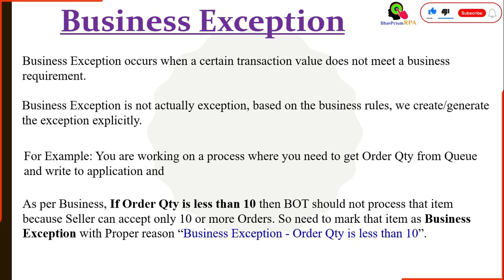Whenever your process goes through the business exception part, it will always check if the order quantity is less than 10. If yes, it will throw a business exception, mark that item as an exception, skip that item, and then pick the next item. If next time the order quantity is greater than 10, then it will start processing with the other part. This is what business exception is.